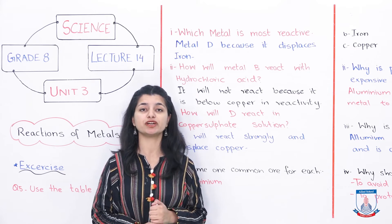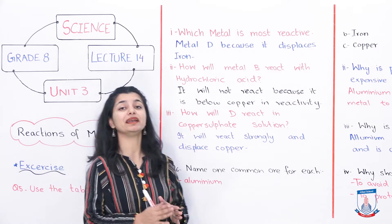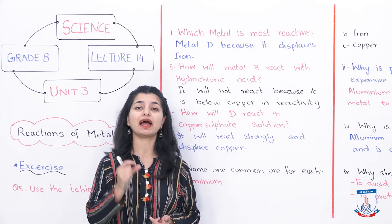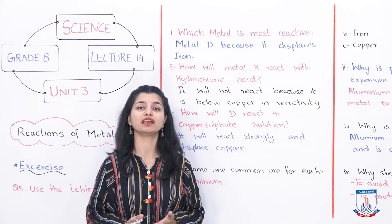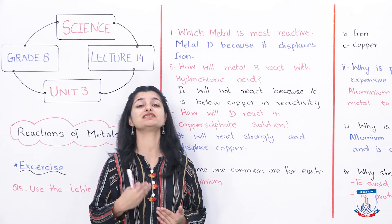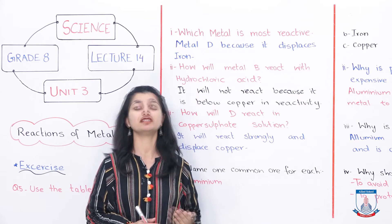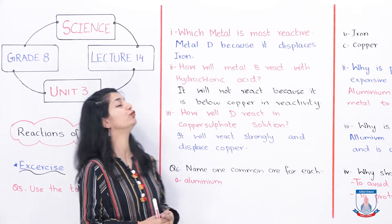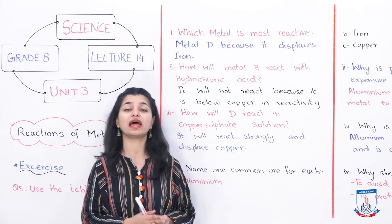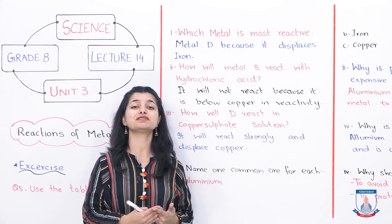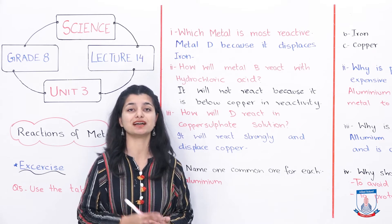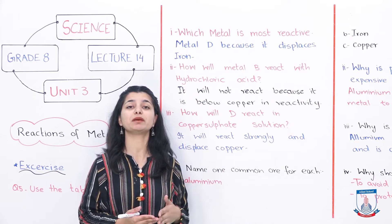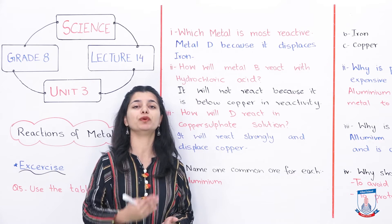The first part of question 5 asks: which metal is most reactive? The answer is the metal that can displace iron sulfate is the most reactive, because iron is the most reactive among iron, copper, and silver. The metal that has displaced iron is higher on the reactivity series. Here, metal D is the most reactive because it displaces iron — metal D is more reactive because it has displaced iron from iron sulfate.